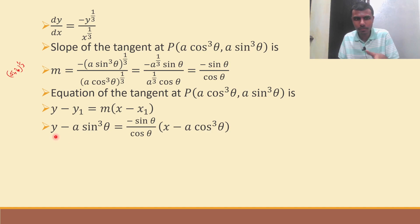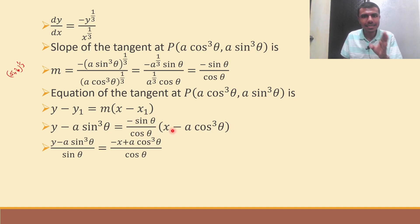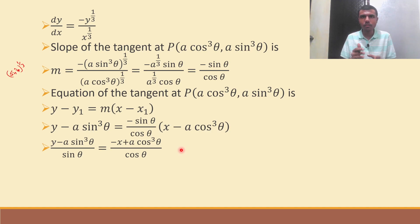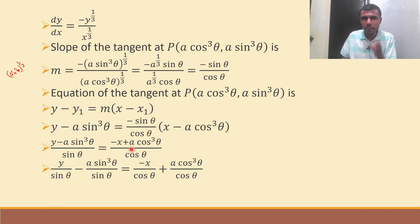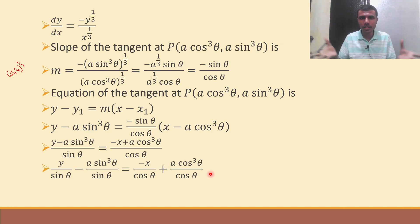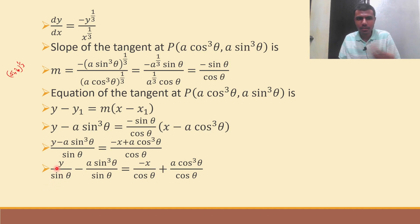Bring sinθ to the LHS — it becomes the denominator. So (y − a·sin³θ)/sinθ = −(x − a·cos³θ)/cosθ. Taking the minus inside: = (−x + a·cos³θ)/cosθ. Now split the denominators: y/sinθ − a·sin³θ/sinθ = −x/cosθ + a·cos³θ/cosθ. This simplifies to y/sinθ − a·sin²θ = −x/cosθ + a·cos²θ.